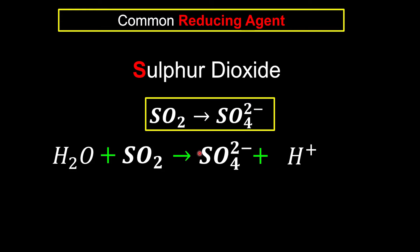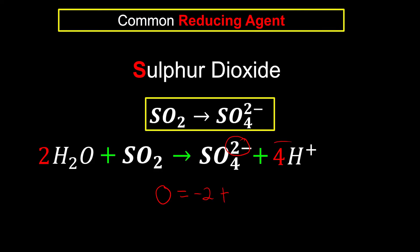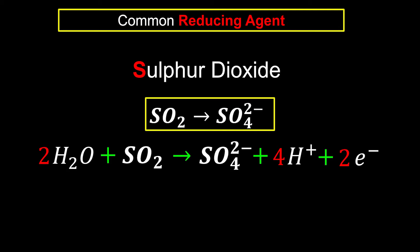After that we balance the atoms. Right hand side we have four oxygen, but on the left we only have two oxygen plus one here. So we need to double the water so that we have four oxygen at the left as well. Then after that we have four hydrogens, so we balance off with four hydrogen at the right. After that we balance the charges. Left hand side has no charges. Right hand side has negative two plus four positive, so in the end we have positive two. The difference is two electrons. So two electrons are added to the more positive side, which is the right hand side. We are done.